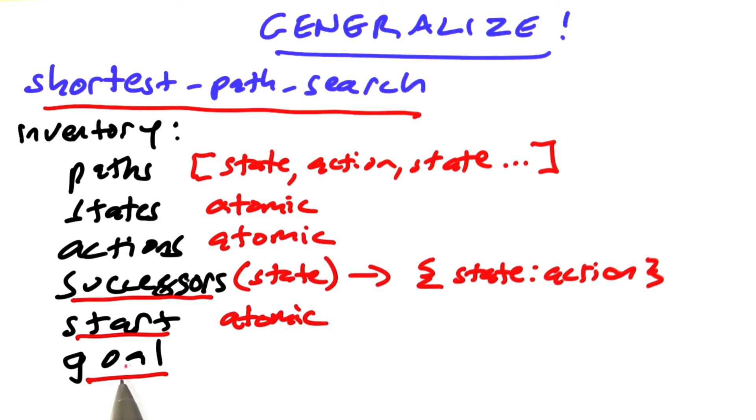Now, what about the goal? Well, we could specify an exact state that we're looking for, but sometimes we're looking for multiple states. We could specify a set of states, but sometimes the set of states is really big. There's lots of states that satisfy the goal. So instead, let's have the goal be a function. It's a function when you pass it a state, it returns a boolean. True or false, is that the goal? And with that, now we're ready to specify shortest path search.